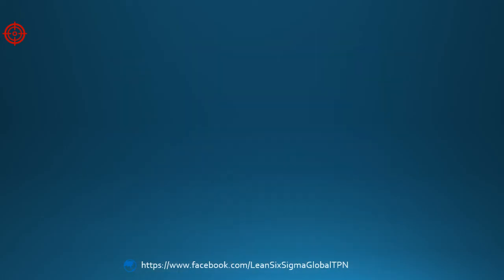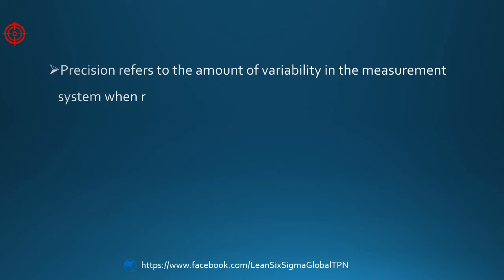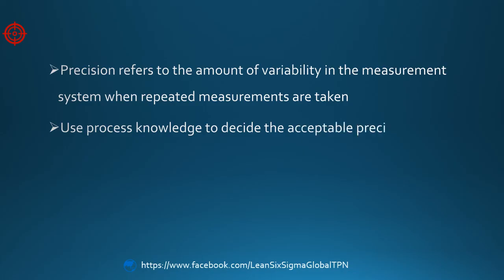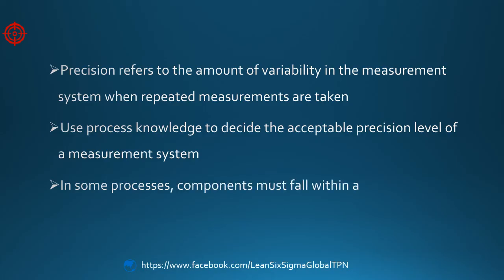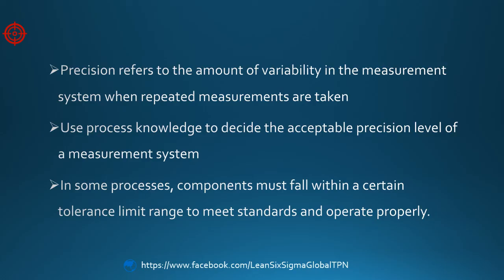Let's review. Precision refers to the amount of variability in the measurement system when repeated measurements are taken. We use process knowledge to decide the acceptable precision level of a measurement system. In some processes, components must fall within a certain tolerance limit range to meet standards and operate properly.